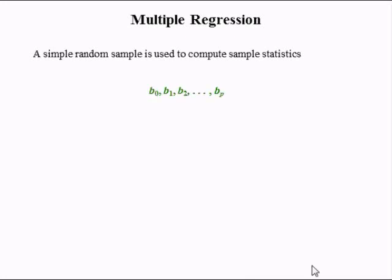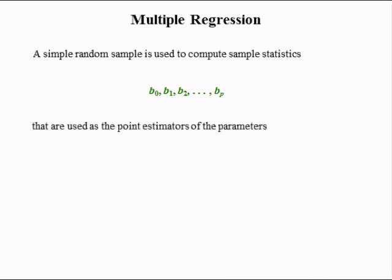A simple random sample is used to compute sample statistics. We computed the sample mean denoted x bar because we don't know the population mean mu. We can use that same data to compute the sample standard deviation denoted s, because we don't know the population standard deviation sigma. Likewise, in multiple regression, we can use the random sample to compute sample statistics — the b's. b0 is the intercept; b1 to bp are the estimators of the slope coefficients in multiple regression.